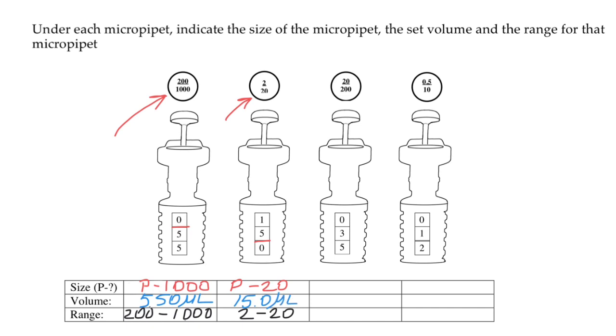The next micropipette's name is P200. The range of liquid volumes that we can take with this micropipette is between 20 and 200 microliters. As you see, the display shows 35 microliters.